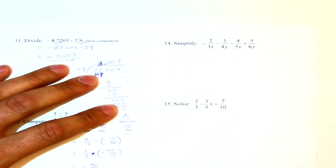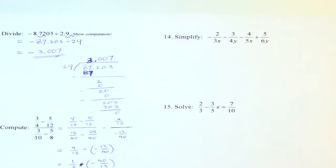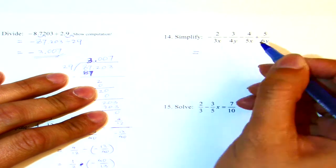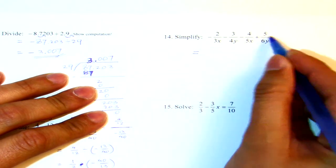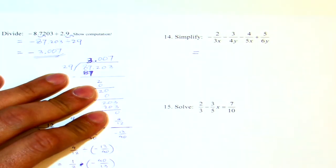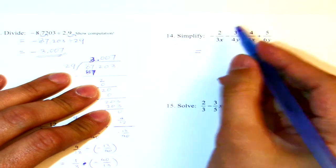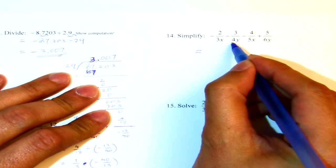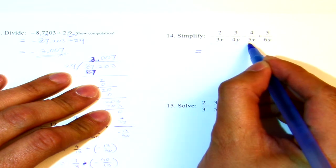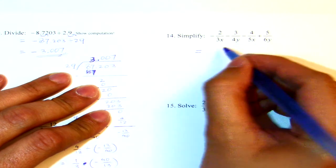Number 14, I need to simplify this, basically we want to put this into one single fraction. What is the LCD of 3x, 4y, 5x and 6y? As for the numbers, 3 and 4 give me 12, 12 and 5 give me 60, 60 and 6 give me still 60.